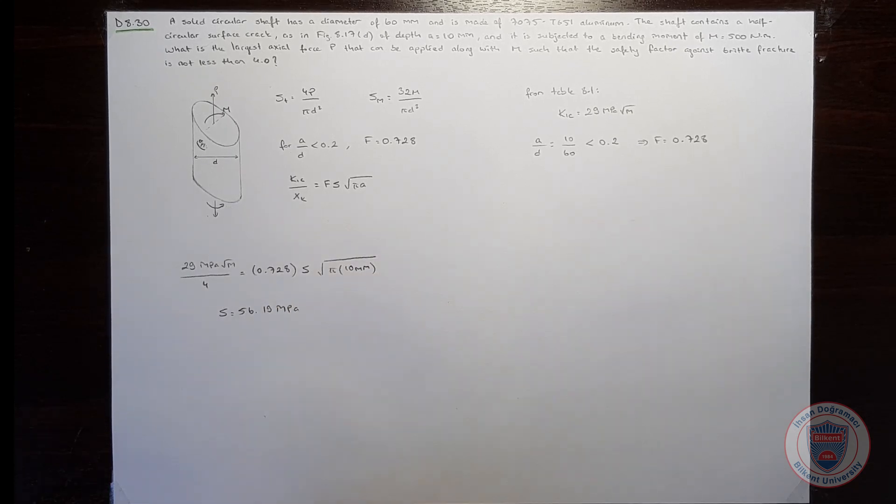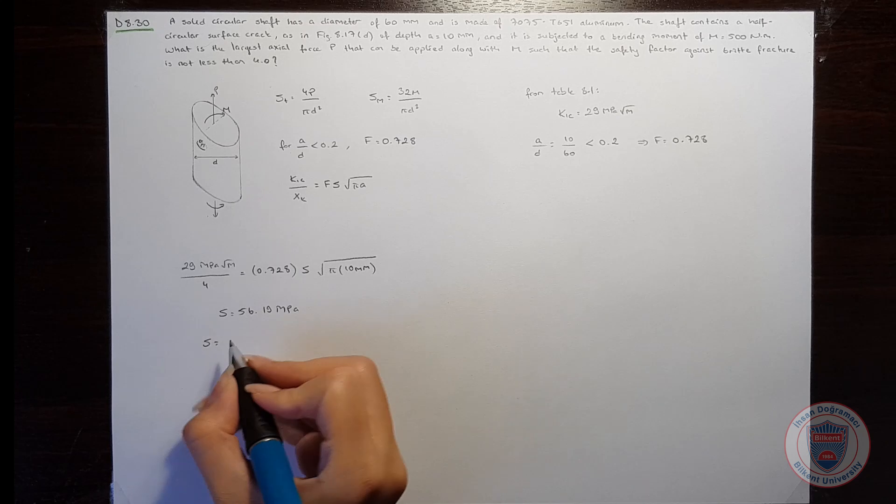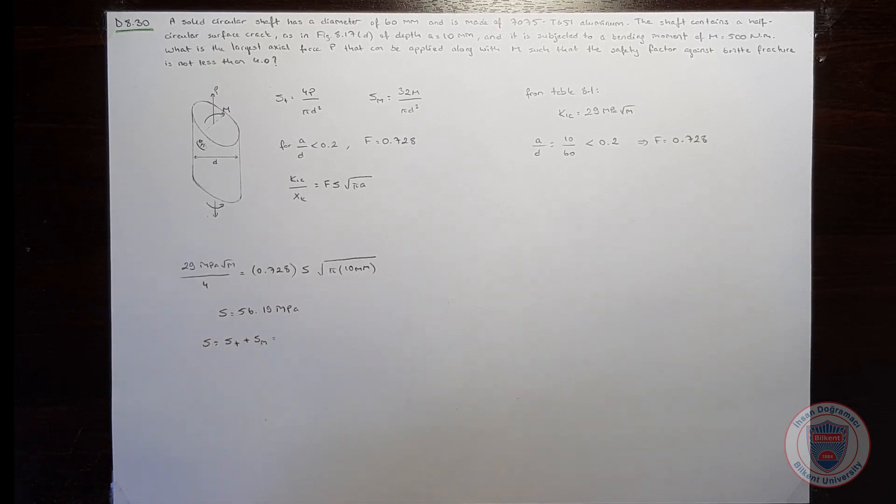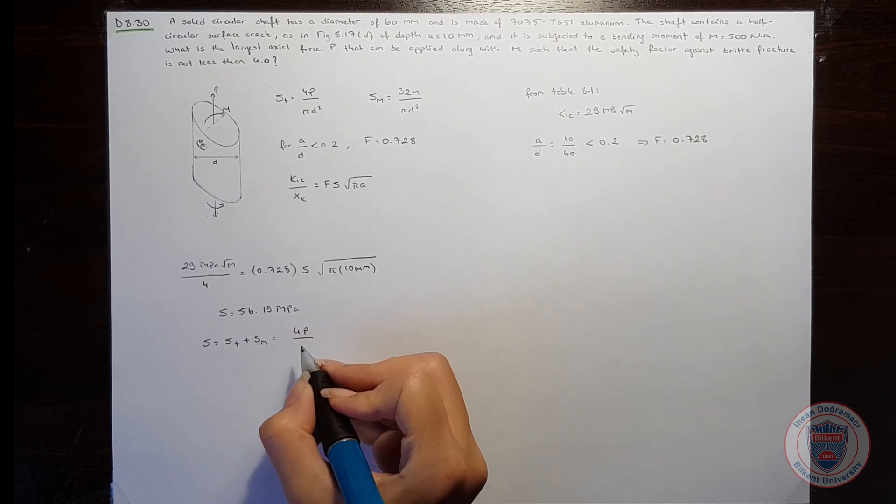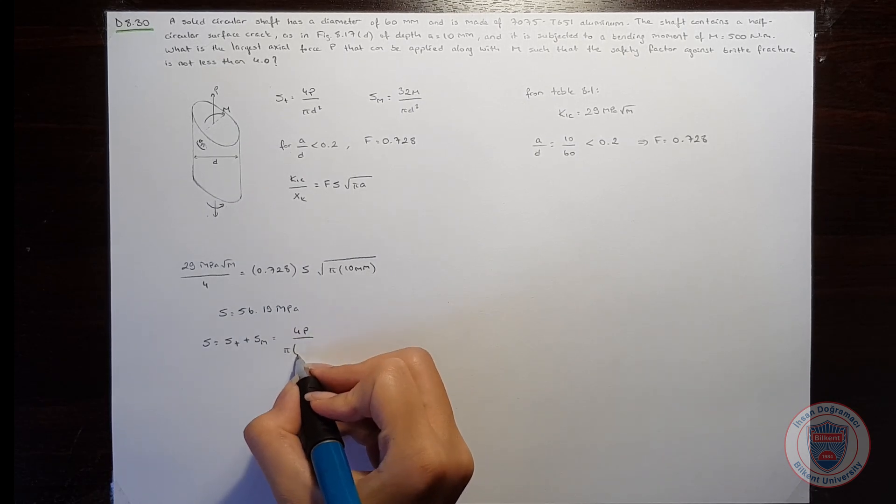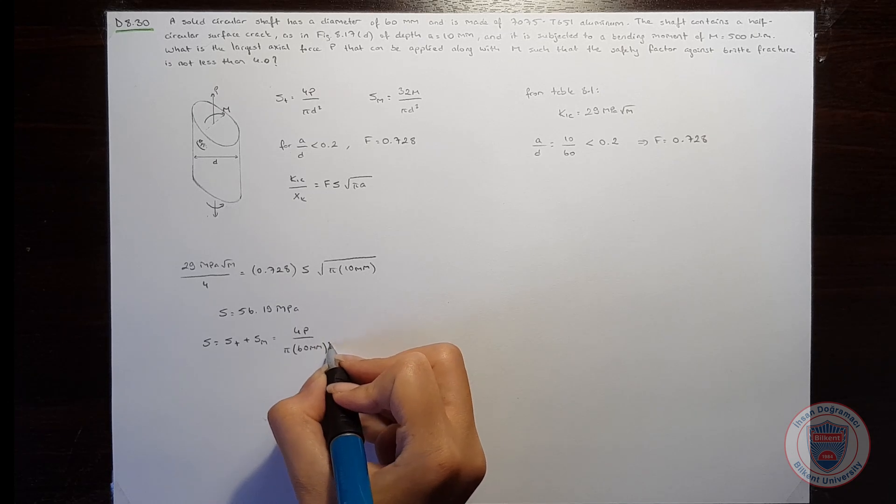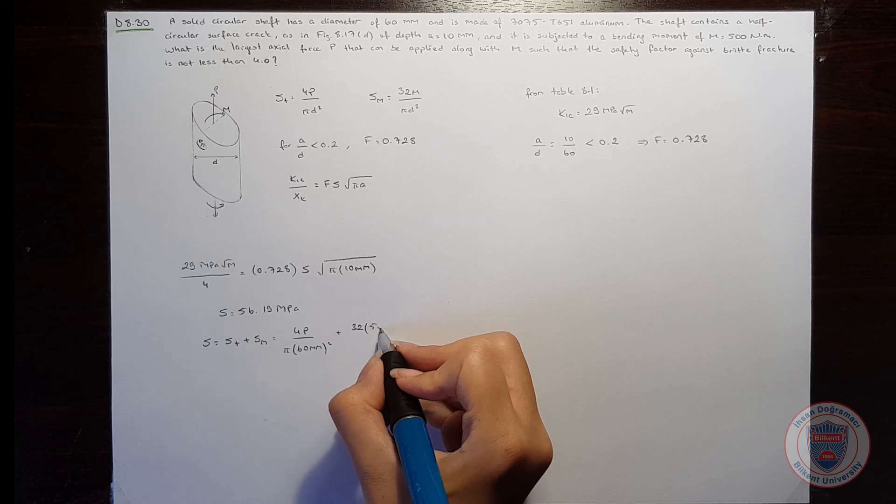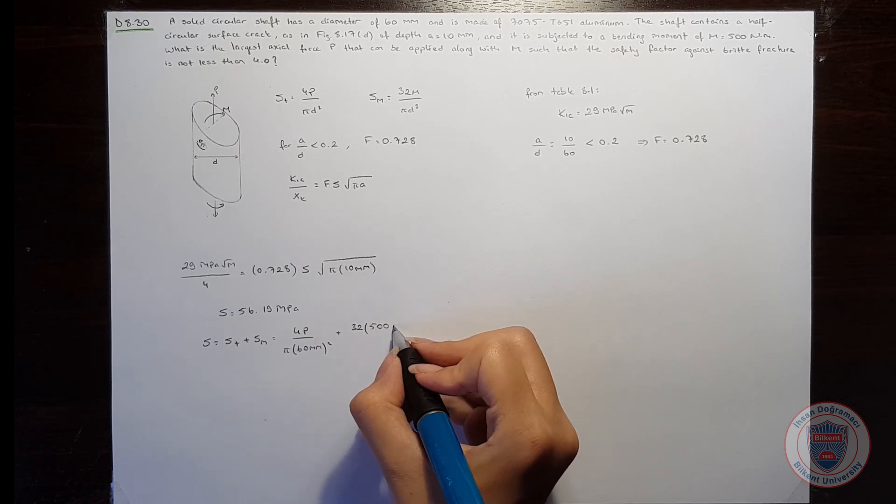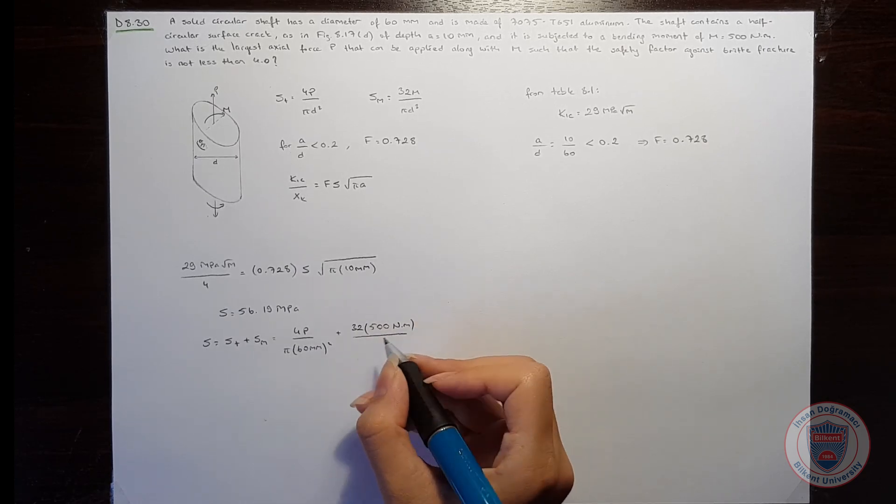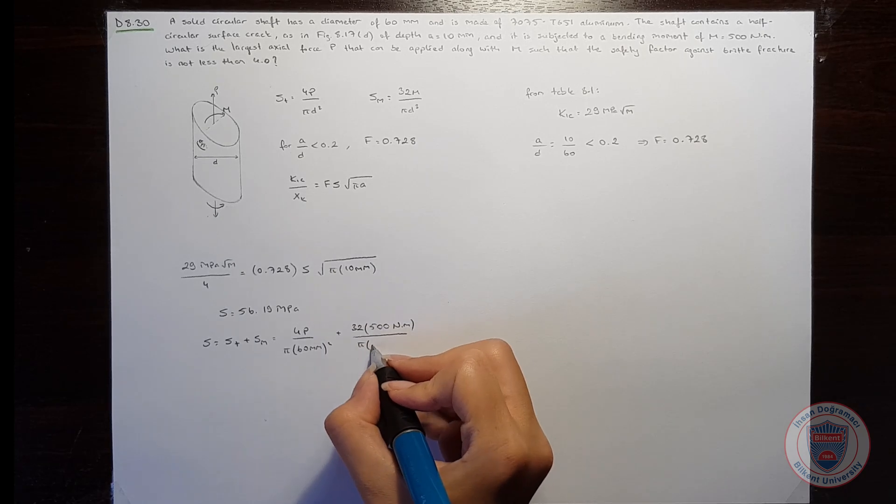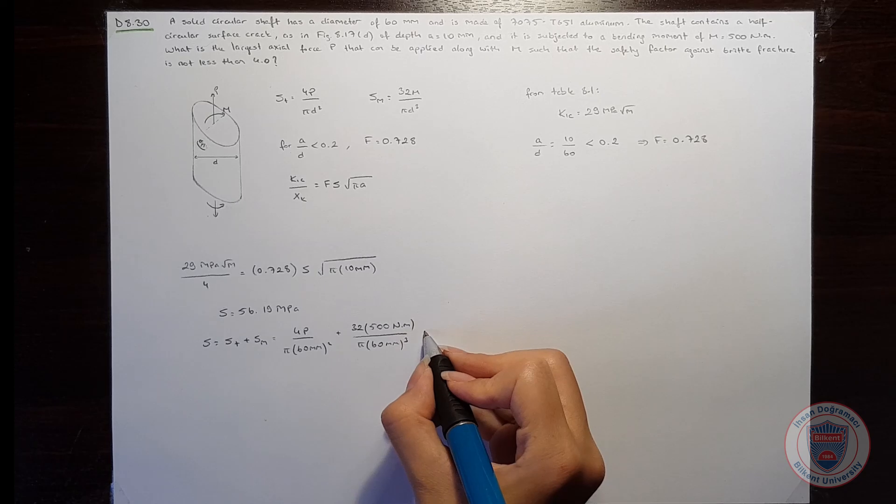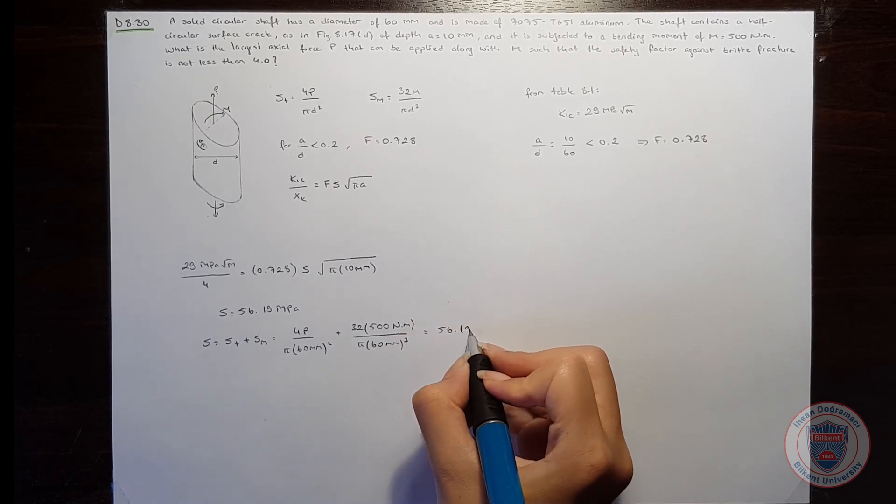This will be the total stress, and it is equal to the sum of SD plus SM, which is 4P over pi D squared plus 32M, which is 500 Nm, over pi D cubed, and this will be equal to 56.19 MPa.